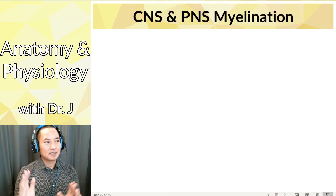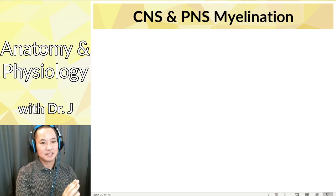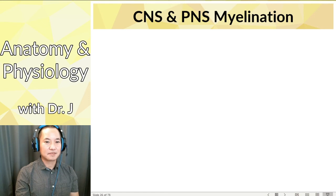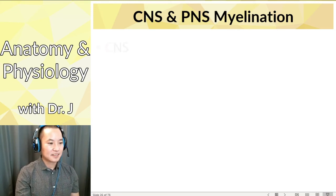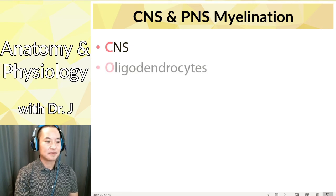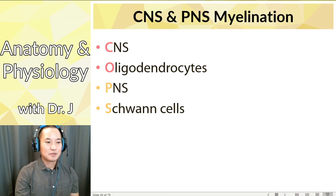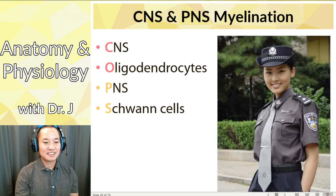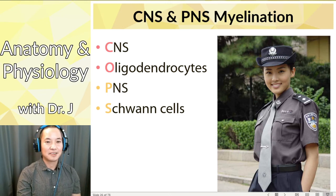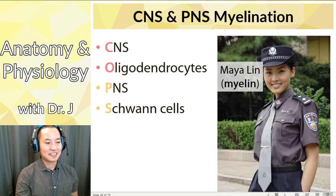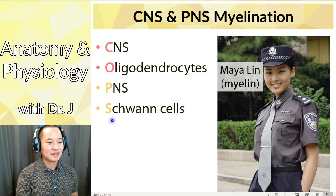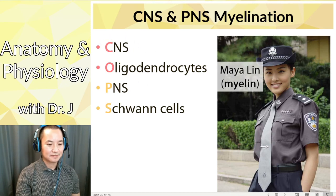To summarize the difference: oligodendrocytes make myelin in the central nervous system, Schwann cells make myelin in the peripheral nervous system. A mnemonic I like is 'COPS' — Central nervous system, Oligodendrocytes, Peripheral nervous system, Schwann cells — starring myelin. Both are involved in myelin, but in different locations. That's the key difference between oligodendrocytes and Schwann cells.